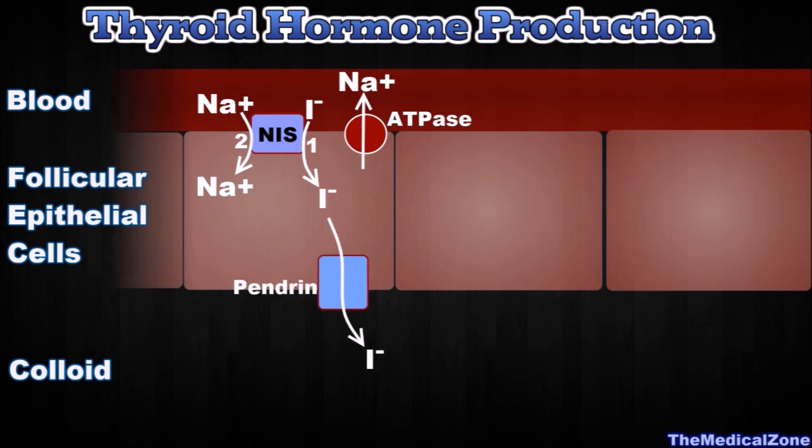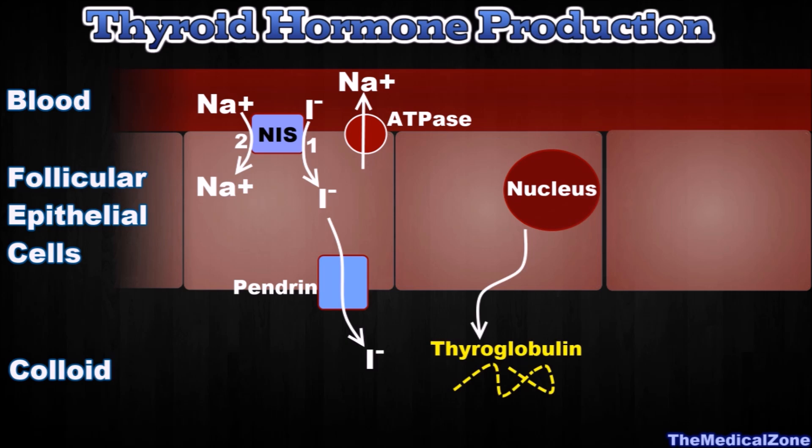Once inside the follicular epithelial cells, iodide is transported into the follicle across the apical membrane. This is done by a transporter molecule called pendrin. Also, large glycoprotein molecules called thyroglobulin are secreted into the follicle. They contain tyrosine amino acids to which the iodide ions will bind. When thyroglobulin and iodide combine, the thyroid hormones form.